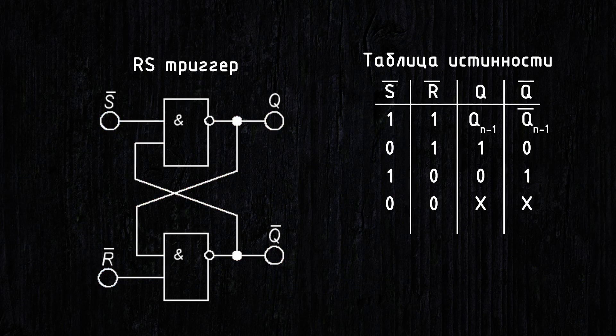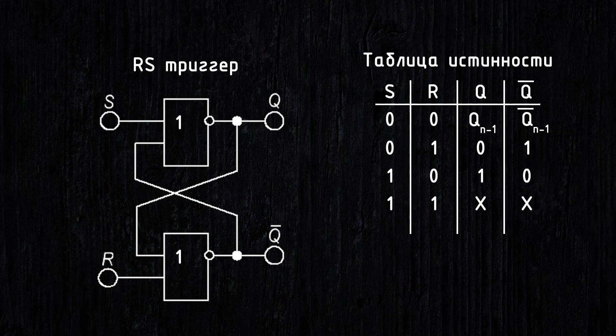If you implement an RS flip-flop using NOR gates, the truth table will be as follows. S and R are no longer inverted: 0 and 0 is storage mode, 0 and 1 is reset, 1 and 0 is set, and two 1s is the forbidden mode.